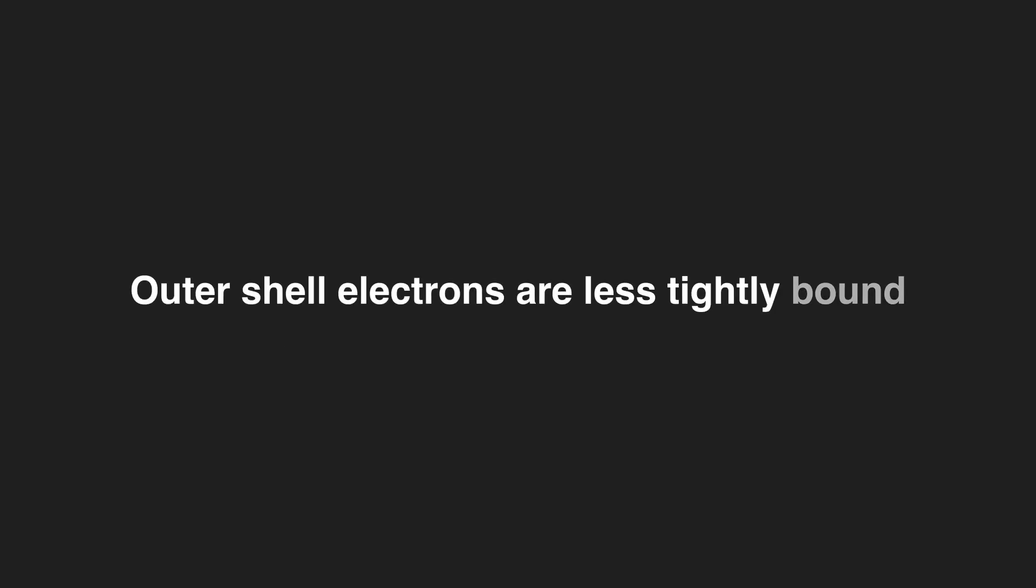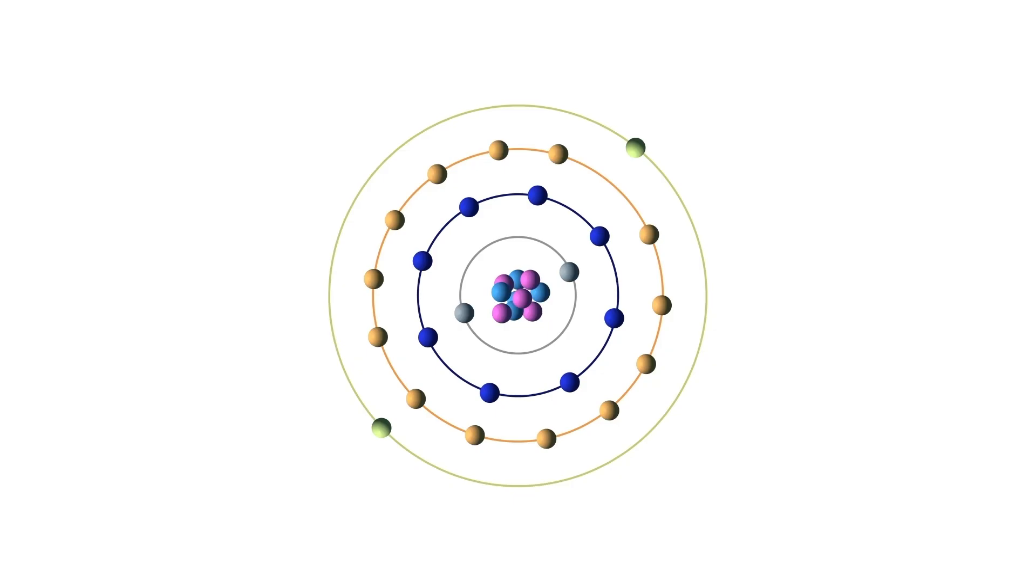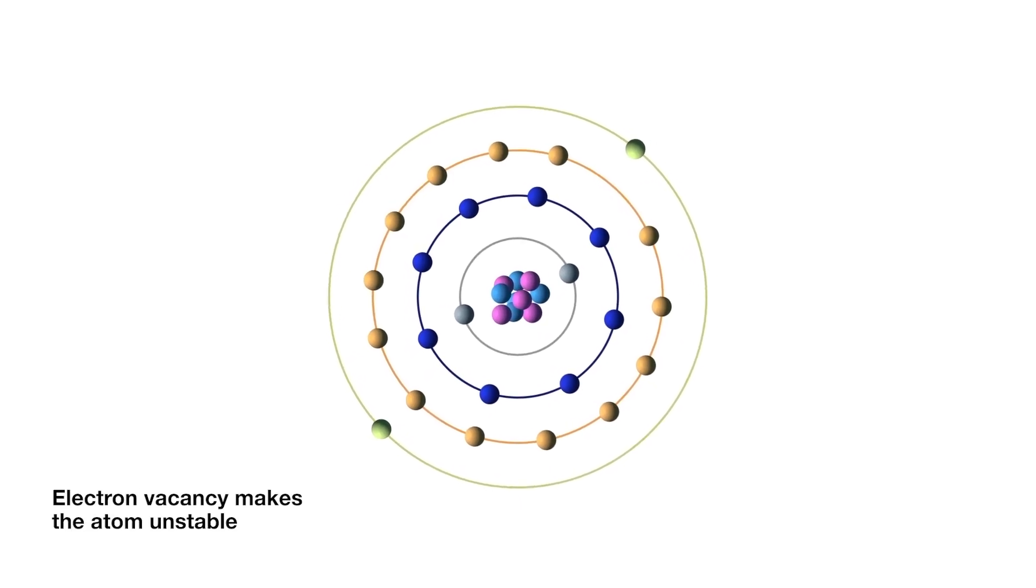Outer shell electrons are less tightly bound to the nucleus of the atom because they are further away from the nucleus and so require less input energy to be ejected. The ejected electrons create a vacancy, making the atom unstable.